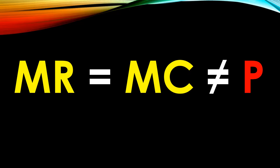The firm still wants to follow the rule of rational life and keep acting until marginal benefit equals marginal cost. In this case, the marginal benefit is the marginal revenue for the firm. So we're going to keep producing until marginal revenue equals marginal cost. But given our monopoly power in this monopoly setting, that will not lead us to a situation where we charge price equals marginal cost.